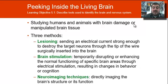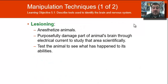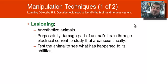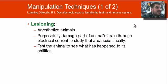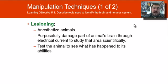With lesioning, we anesthetize the animals and then purposefully damage parts of the animal's brain through an electrical current, and then test to see what happens to its abilities. We don't like to do it, but it does give us a lot of information about what parts of the brain control which parts of the behavior of people and animals.